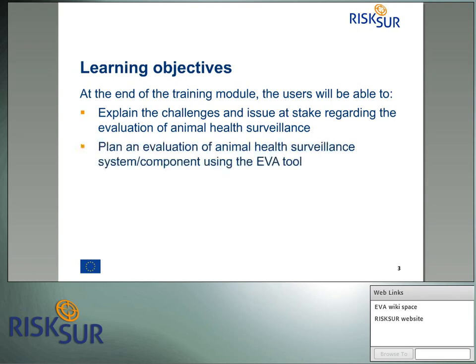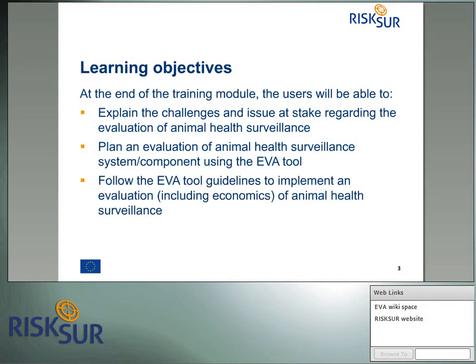Participants will learn how to use the EVA tool to plan an evaluation and follow the essential steps of the process to evaluate animal surveillance. This lecture provides information on where to find guidelines on how to plan, implement, and report on the evaluation process. However, it does not cover specific aspects of implementation such as methods to assess evaluation attributes and economic evaluation methods, which are covered in other modules of the RiskSur training series.